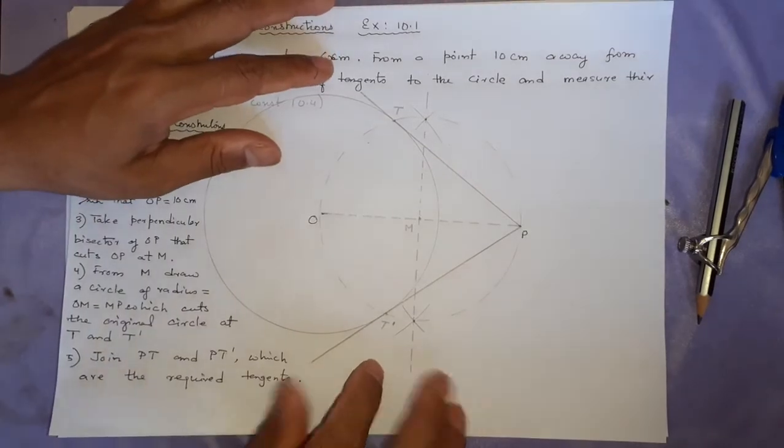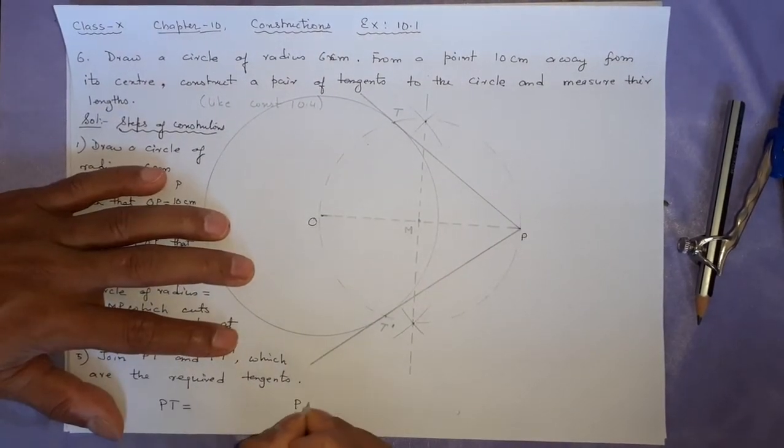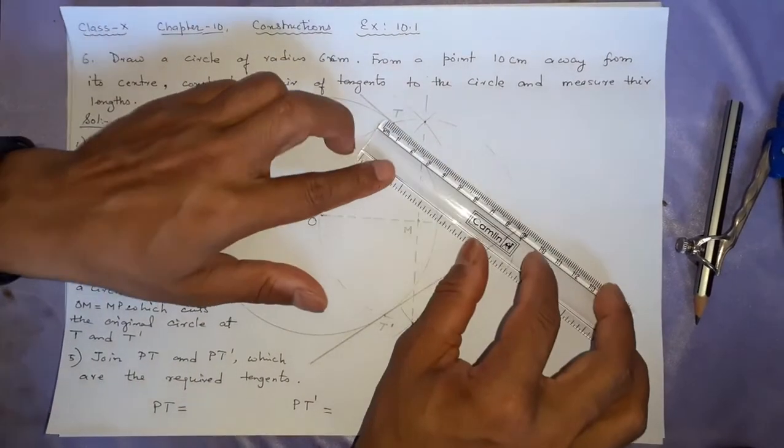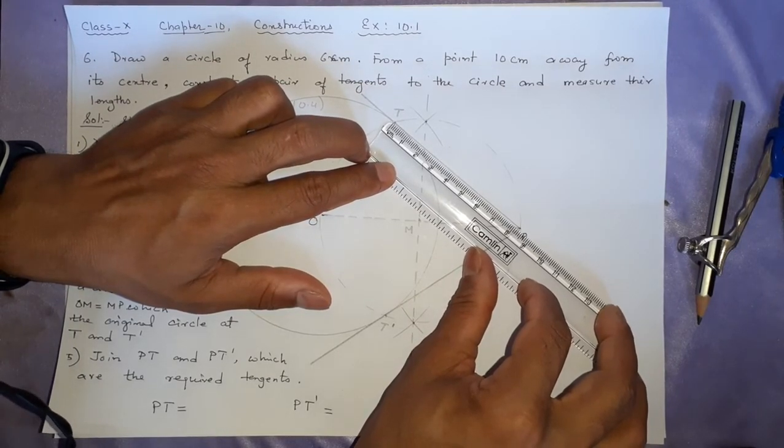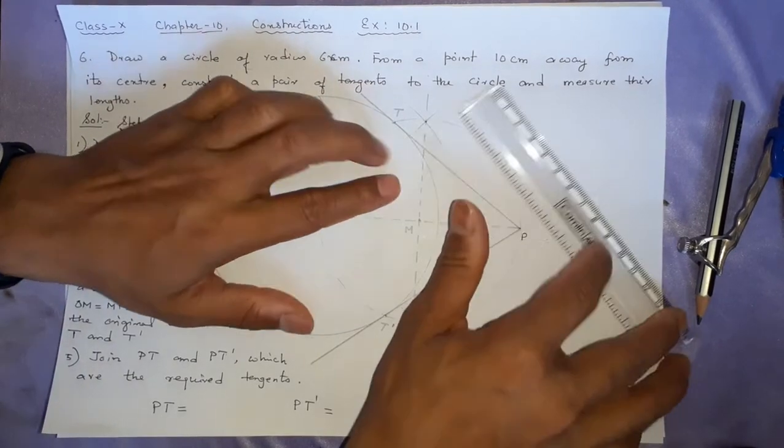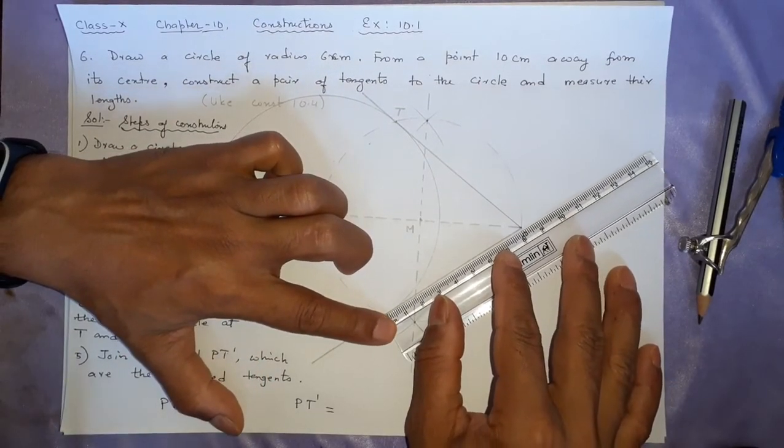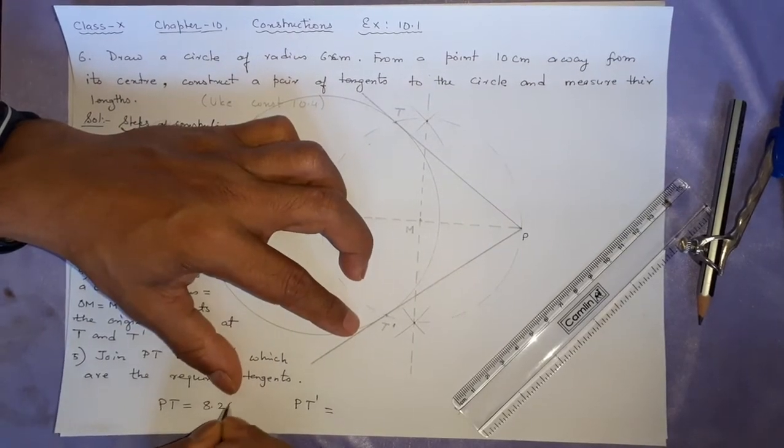Now, next part is measure their lengths. PT equal to how much? PT dash equal to how much? They have to be same, but let us see our calculation. How good we have done? So, then this 8.2 I guess. This side it is 8.2. So, that will be your answer. 8.2 centimeter.